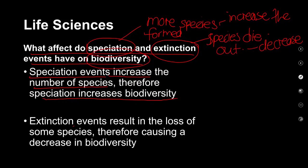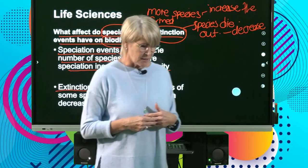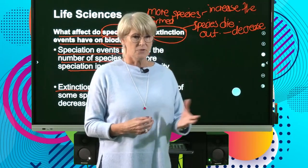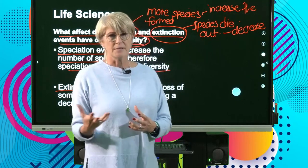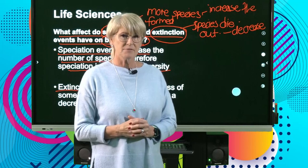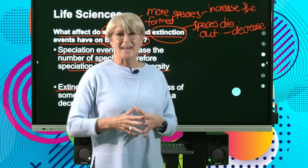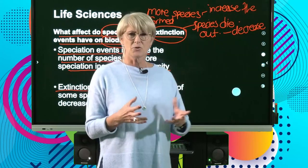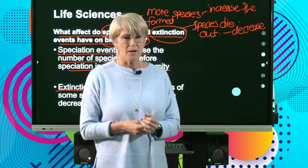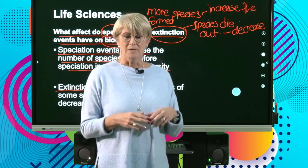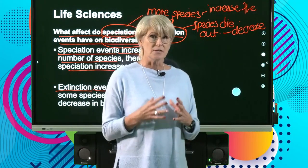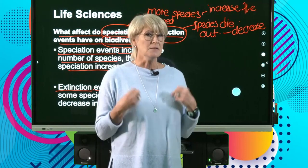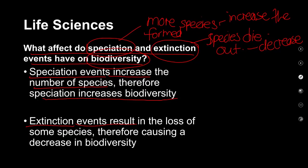Then looking at extinction events — scientists have looked through the ages at the fossil record and different aspects of the environment, and have seen that there were times of mass extinctions for whatever reason. It could have been an asteroid that hit the Earth, a volcano, an earthquake, or continental drift that changed environmental conditions and many species died out. This results in the loss of some species and therefore causes a decrease in biodiversity.